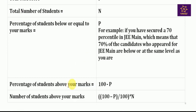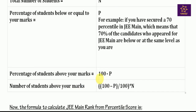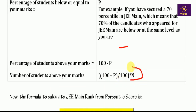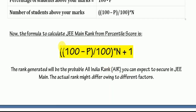The number of students above your marks is calculated as: (100 minus P) divided by 100, multiplied by N, where N is the total number of students. So the formula to calculate JEE Main rank from percentile score is: Rank = ((100 − P) / 100) × N + 1. This is the formula you can note down.